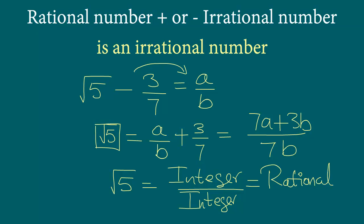So square root 5 is a rational number, which we know is incorrect. Now keep in mind — whenever you are proving these types of questions, meaning a combination of a rational number and an irrational number, you don't have to prove that square root 5 itself is irrational.